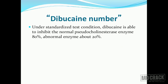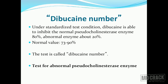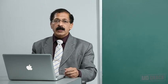The dibucaine number was mentioned during the comparison of D-tubocurarine and succinylcholine. Under standardized test conditions, dibucaine is able to inhibit the normal pseudocholinesterase enzyme by 80%, and the abnormal enzyme by about 20%. If you give dibucaine to the patient and find out the percentage inhibition, you can know if this patient has abnormal pseudocholinesterase enzyme. The normal value is 73 to 90%. This test is called the dibucaine number and is used to detect if the patient has abnormal pseudocholinesterase enzyme, which is significant in the case of succinylcholine. That was the summary of all the skeletal muscle relaxants and nicotinic blockers.